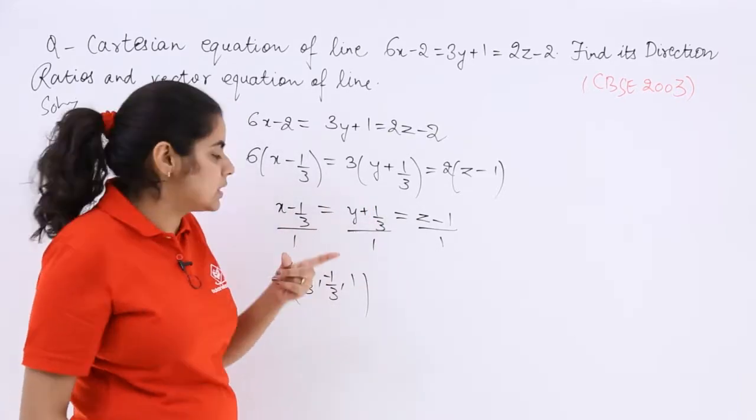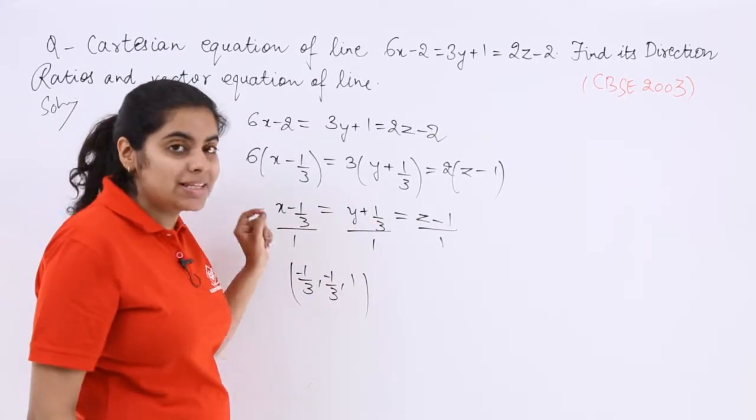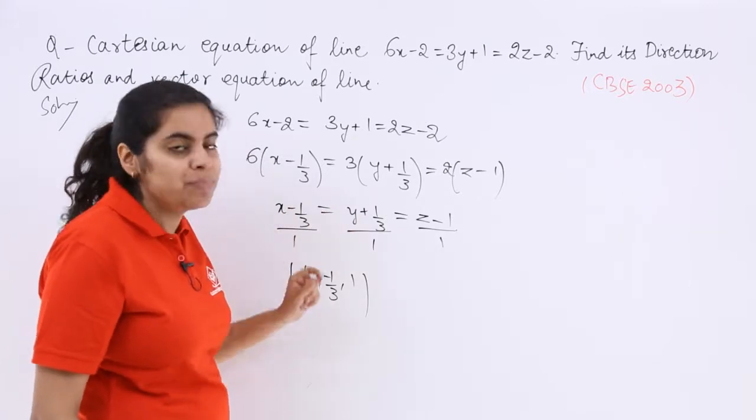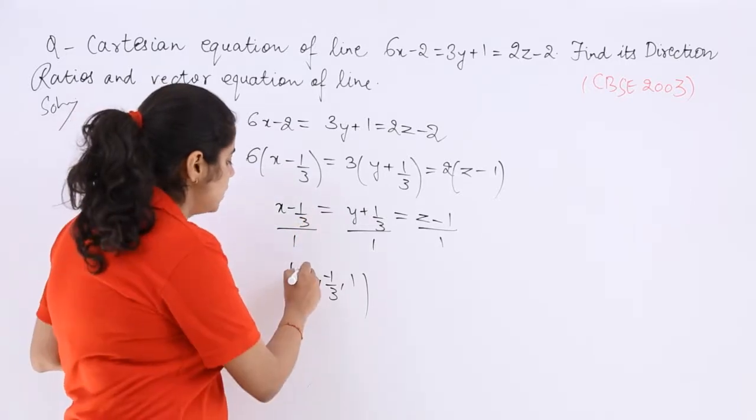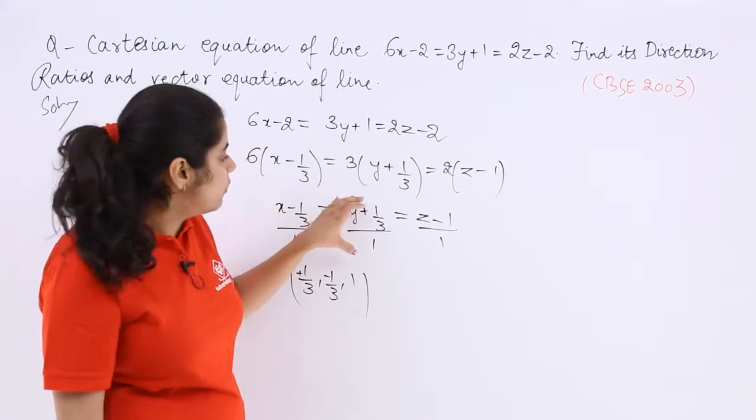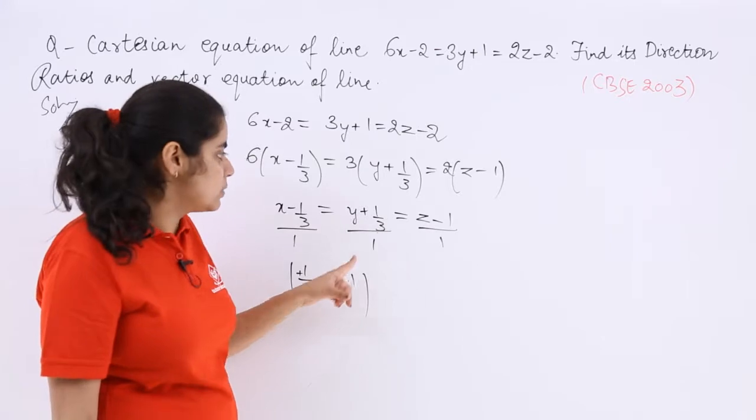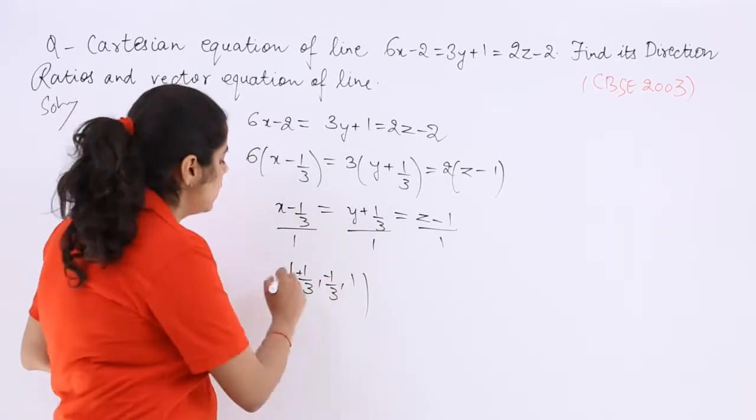And since these are with minus, this is with plus, you have to take care of the sign. You had the formula x-x1 upon A. So x-x1, that means x1 is 1 by 3, so you can place plus sign. y-y1, so it is minus 1 by 3, and here it is 1. So this is the point.